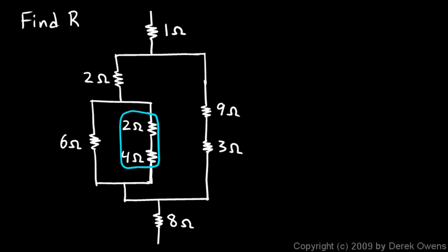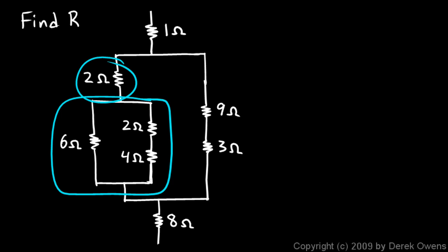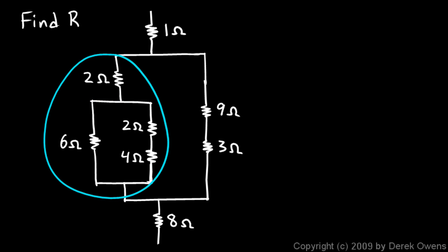has to be 6 ohms. We could take this and then that would be in parallel with that, and we'll work that out and get one number for this piece right here. And then that is in series with that, so we'll add those up and get one number for that whole piece.